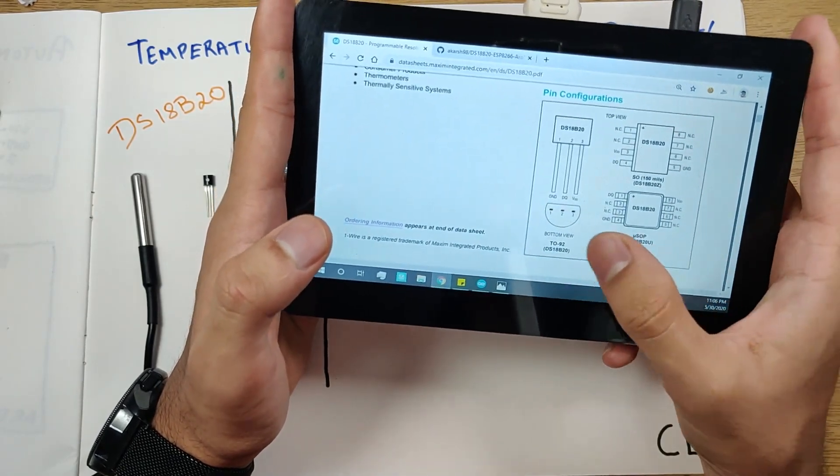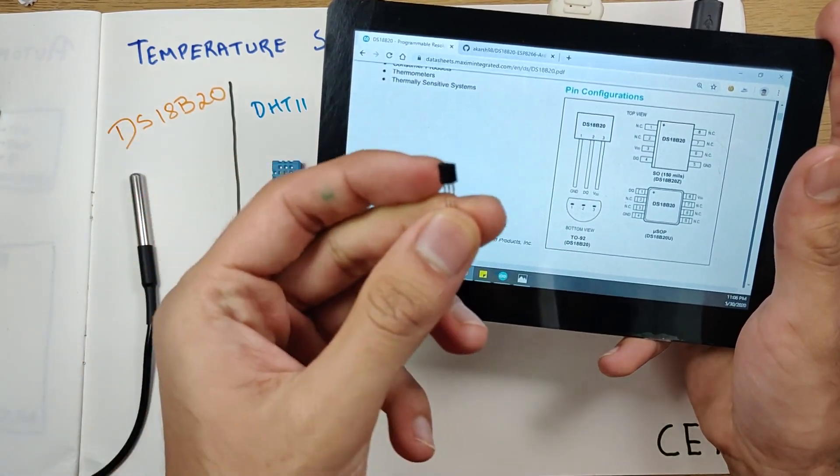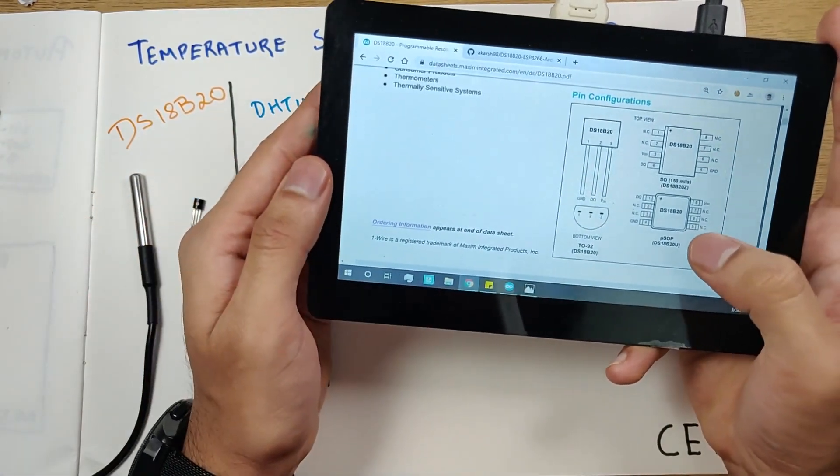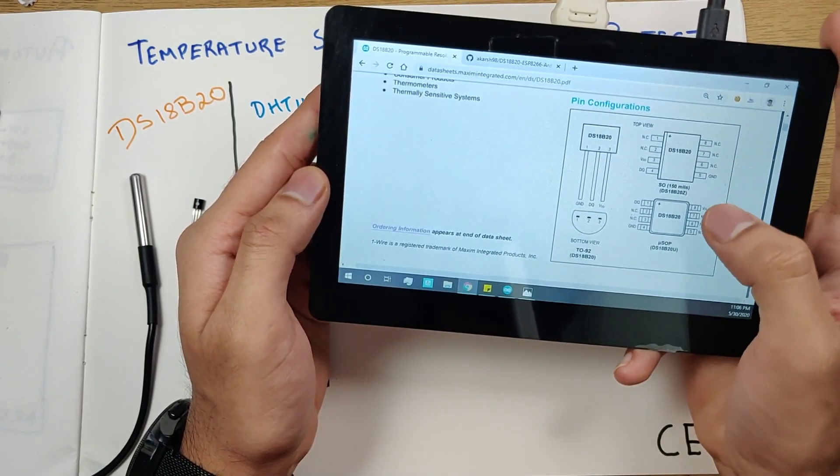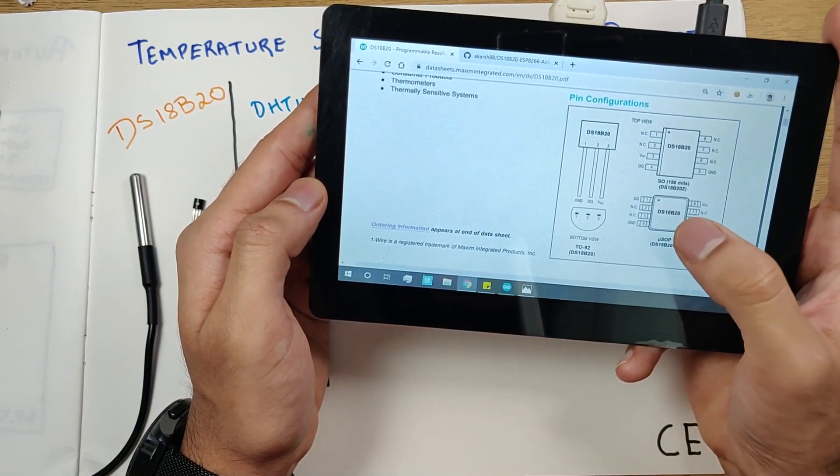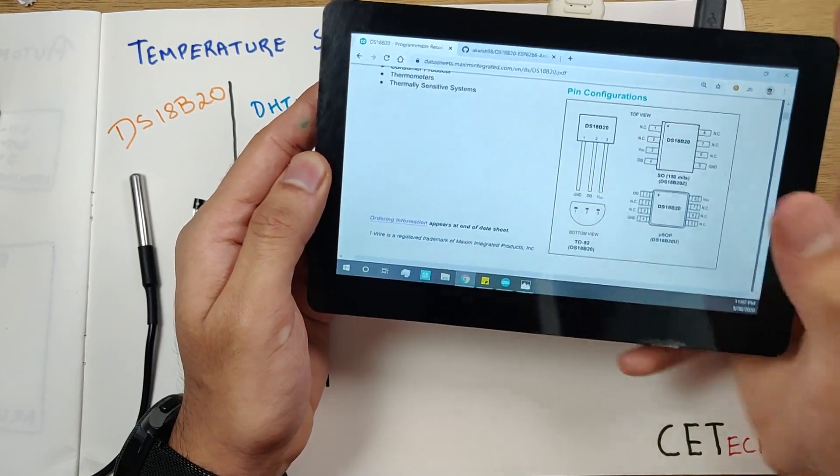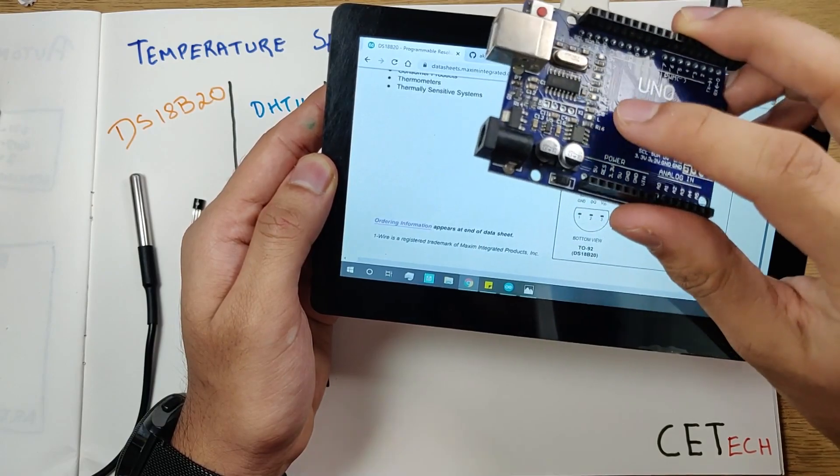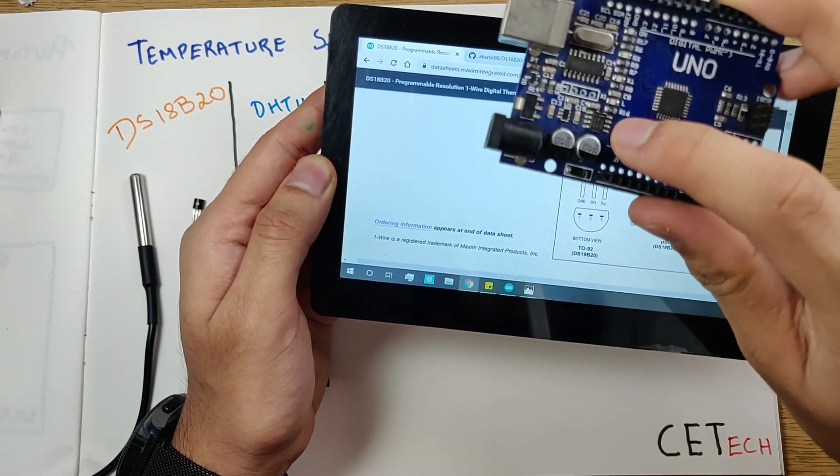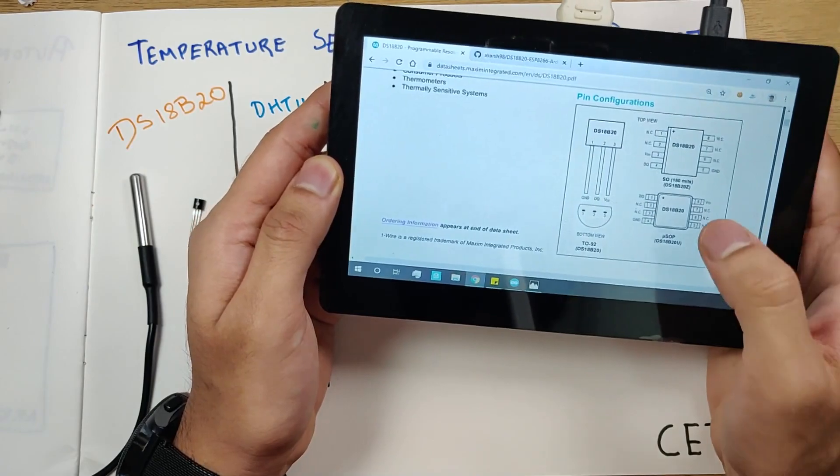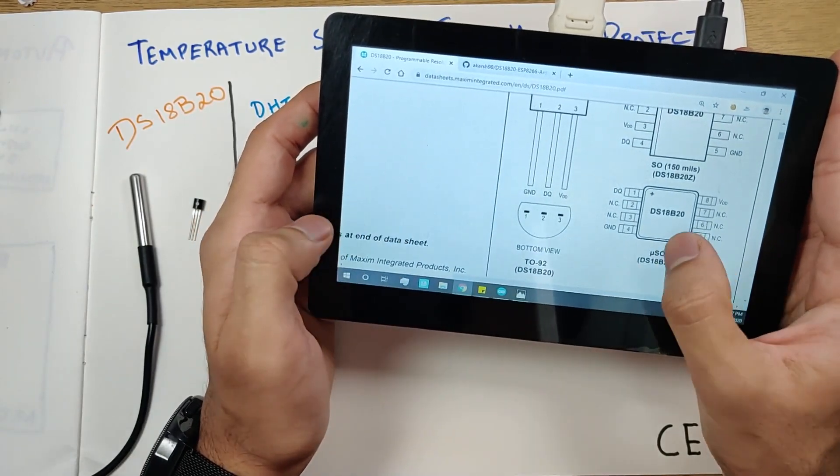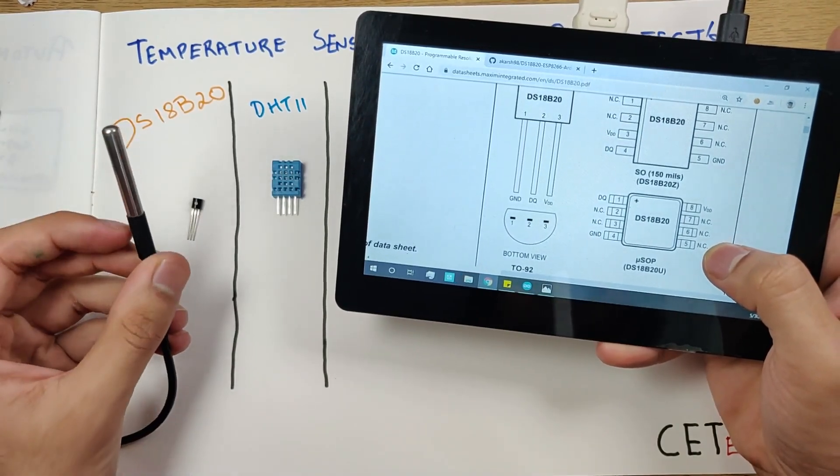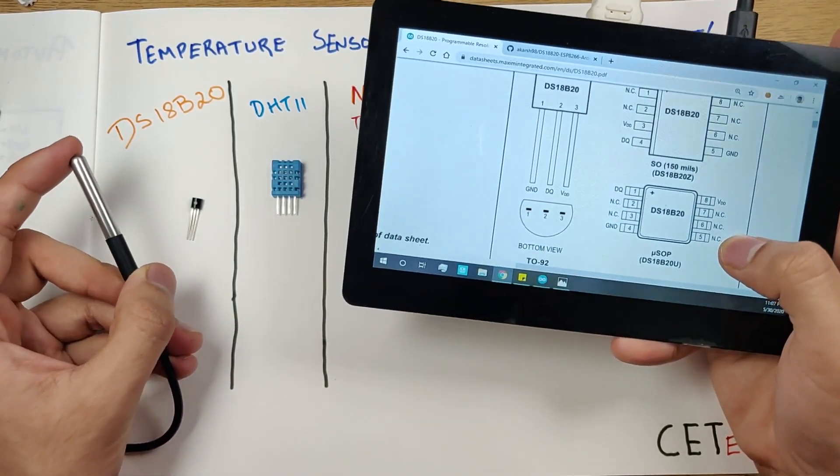So the datasheet lists around three types of packages. This one is the TO-92 which we have right over here, which is often used for small transistors. We have this one micro SOP and SO package as well. These are basically surface mount IC forms. By surface mount I mean these small ICs that are here, like this IC. We have the DS18B20 package available as well.